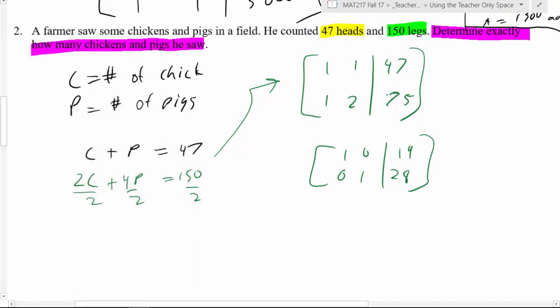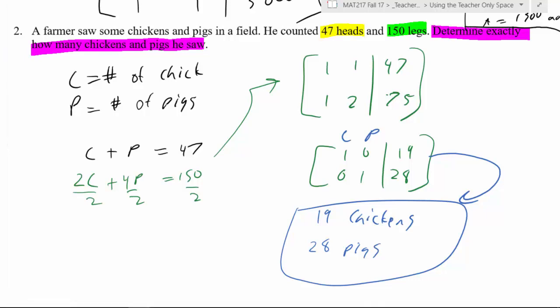So what does that mean? Interpret your answer. Let's see, don't forget your columns. This was C, this was P. So therefore there were nineteen chickens and twenty-eight pigs. Now, is it okay to jump straight from here to here? Absolutely! As long as you're writing your answer out and you're fully interpreting it, that's perfect. You don't have to show me the C equals nineteen and P equals twenty-eight.